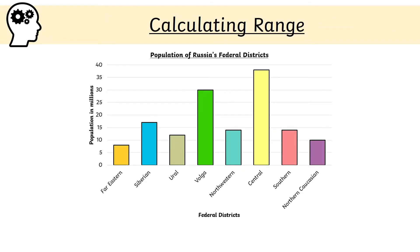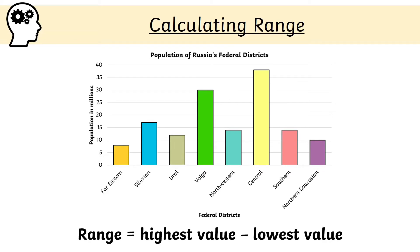When looking at a set of data such as this bar graph, we can also perform statistical tests. One of these is called range. The range tells us about the spread of a set of numbers — in other words, whether the numbers are close together or spread out. The range is worked out by finding the difference between the highest and lowest values, using the calculation: range equals highest value subtract lowest value.